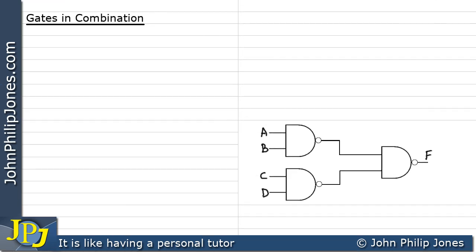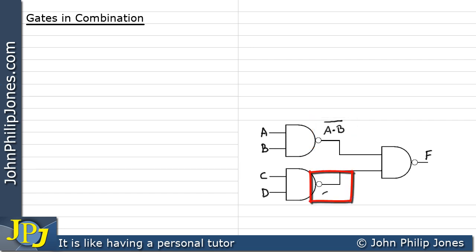Here we have another combinational logic circuit made of three NAND gates. We'll produce the output of each gate in turn. The first gate gives us A and B, all NOTted. Below that, we have C and D, all NOTted.